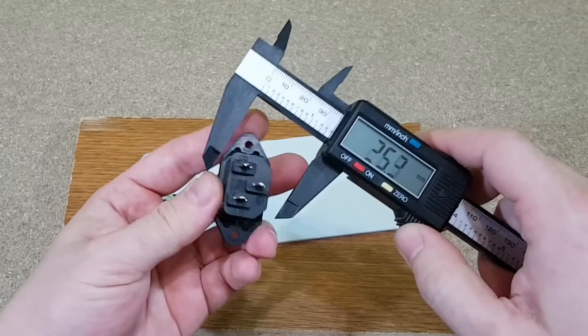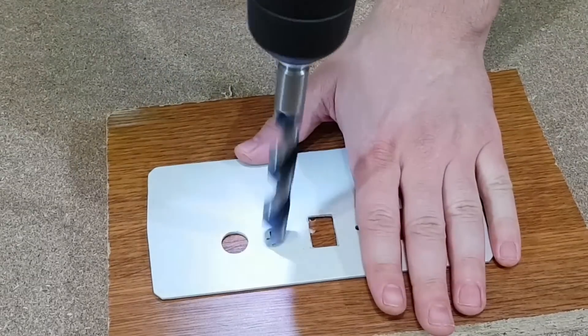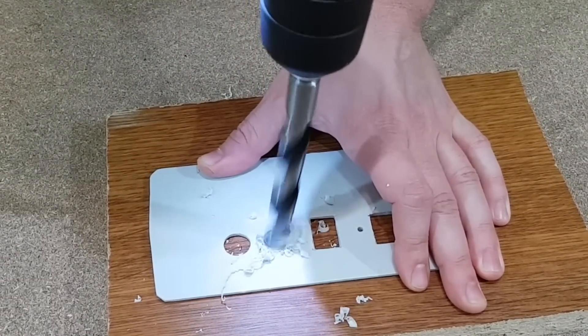On the back panel I will install the mains connector, a rocker switch and fuse holders. Here you can see again how thick and strong this plastic panel is.